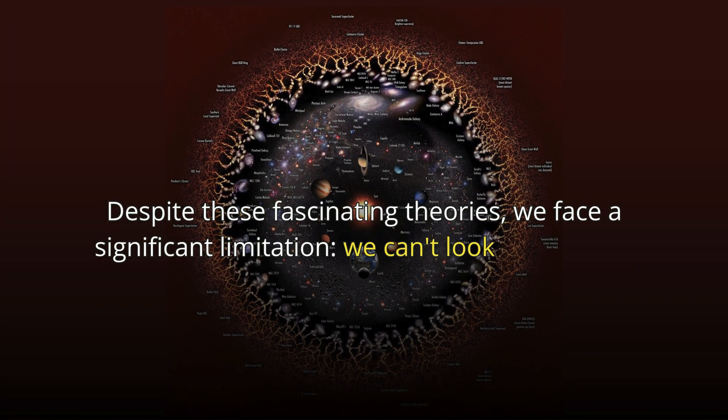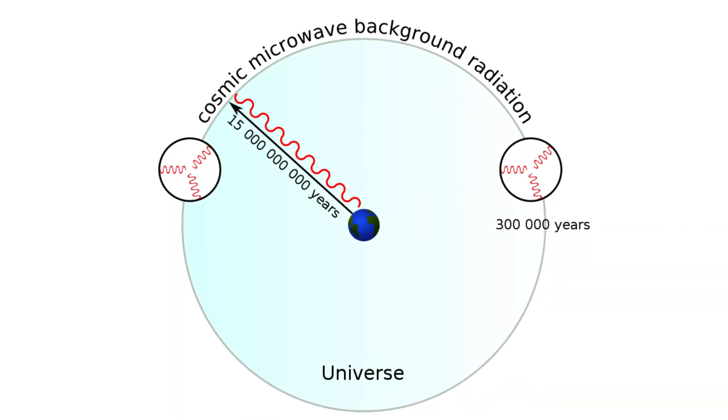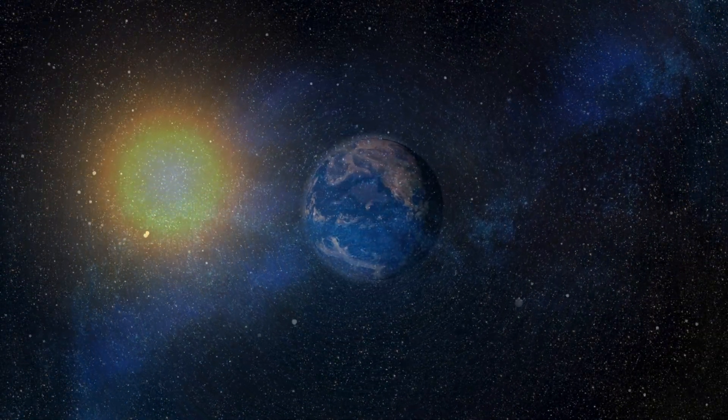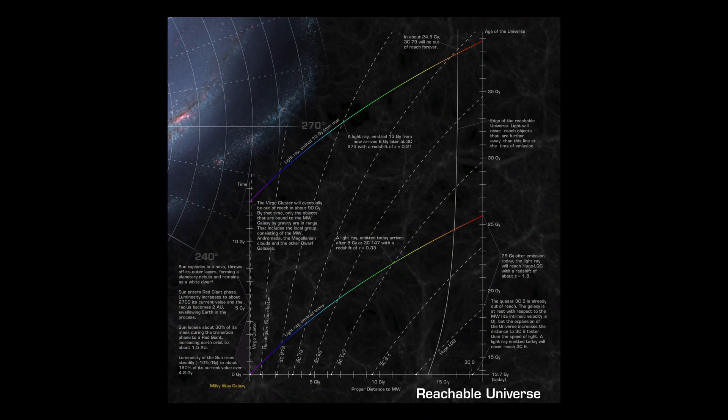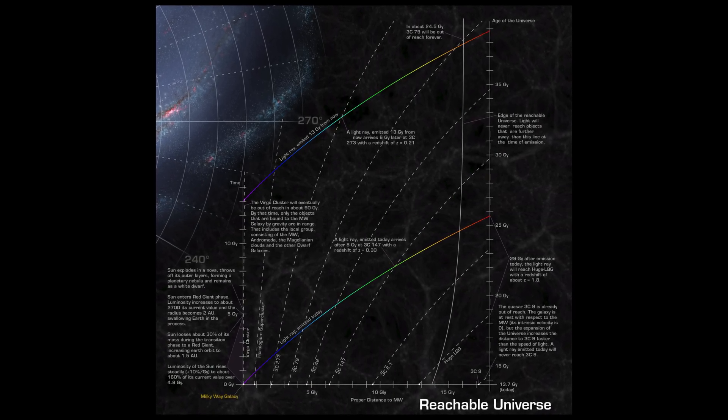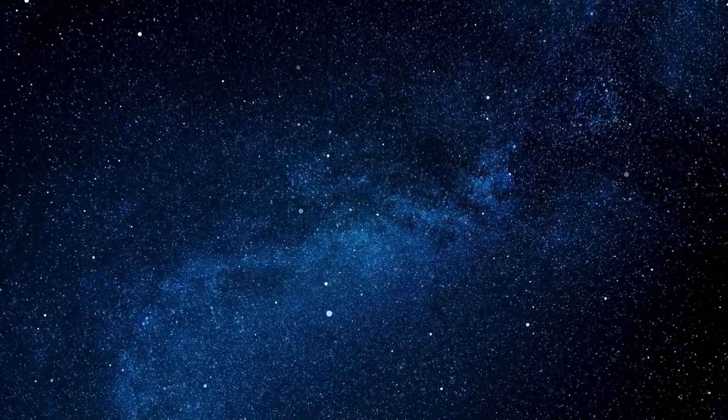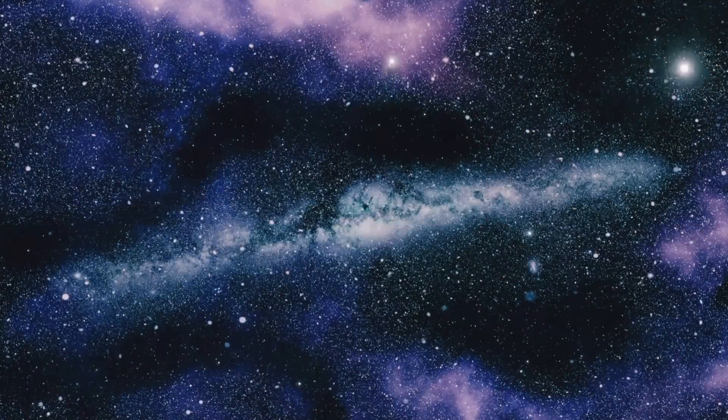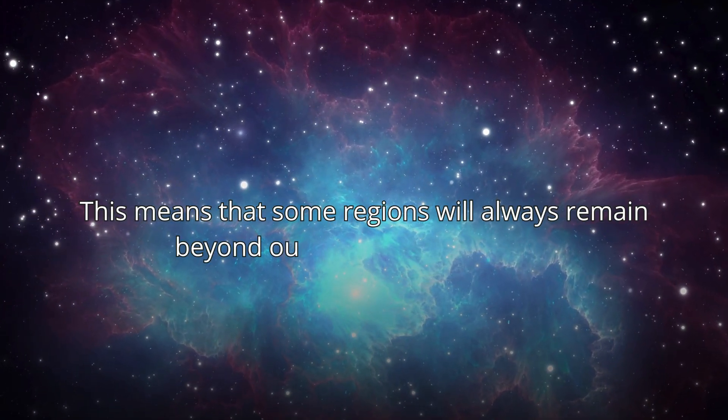Despite these fascinating theories, we face a significant limitation. We can't look beyond the observable universe. This limitation is due to the cosmic light horizon, the maximum distance from which light has had time to reach us since the Big Bang. The cosmic horizon is the edge of our vision. We can't see beyond it. What lies beyond the cosmological horizon? Nothing can have gotten here yet, as it takes time for the light to travel through space to reach us. Further, it is stated that the universe continues to expand, and distant objects are moving away from us at speeds greater than the speed of light due to this expansion. This means that some regions will always remain beyond our observational reach.